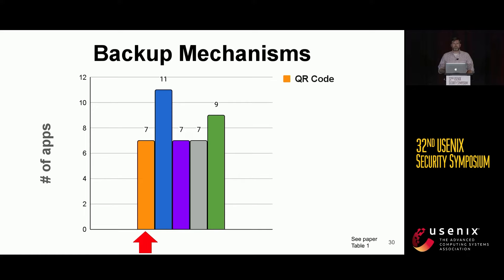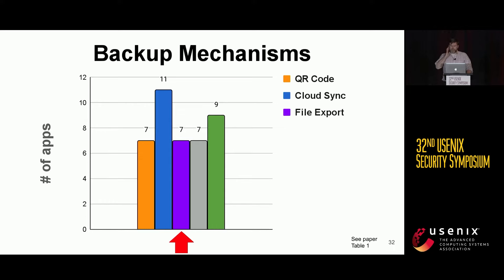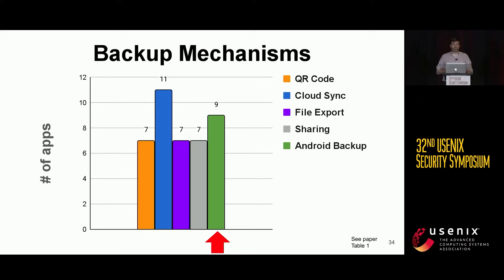The most common backup mechanism was cloud-based backups that stored something in the cloud. There were seven apps that allowed users to export their secrets to a local file on the device, which could then be shared like any other file. Some apps specifically allowed users to share TOTP secrets directly from within the app using the standard Android sharing menu — text message, email, or other supported apps. And nine apps could send the TOTP backup to the user's Google account using the native backup capability of Android.